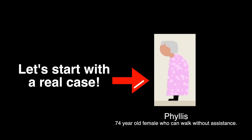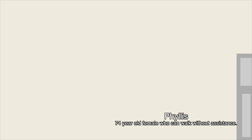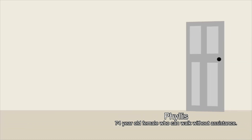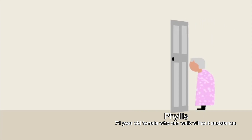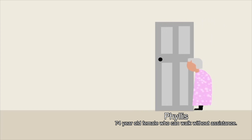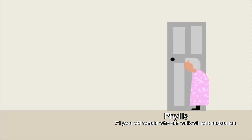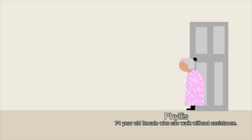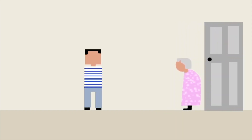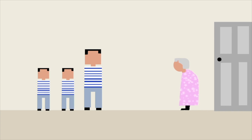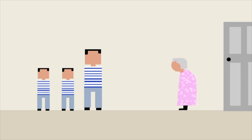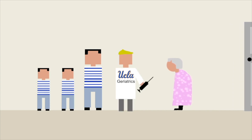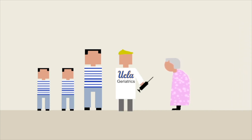Let's begin with a real case. In this animation I want to introduce you to Phyllis. She is a 78-year-old community dwelling female who is ambulatory without an assisted device at baseline. Today she's doing well. She lives in Los Angeles in a single-story home and has a son and two grandchildren who live nearby. Her primary care doctor sees her about twice a year and helps her manage her diabetes and heart failure.